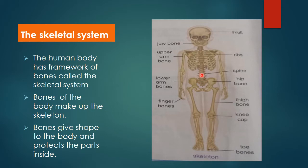The function of the skeletal system is that it gives shape to the body — your body's shape is because of these bones. It is also responsible for protecting certain organs which are present inside your body. So the two main functions of the skeletal system are: it gives shape to the body, and it protects the internal parts of the body.